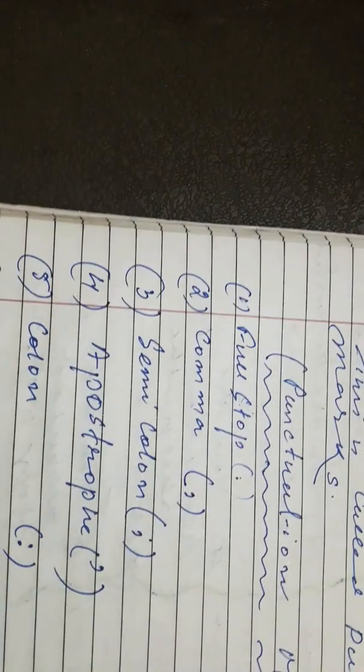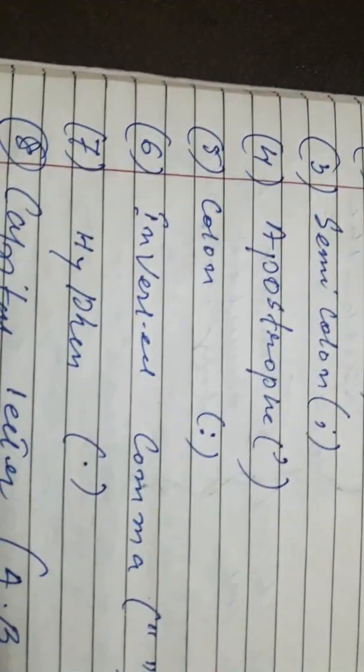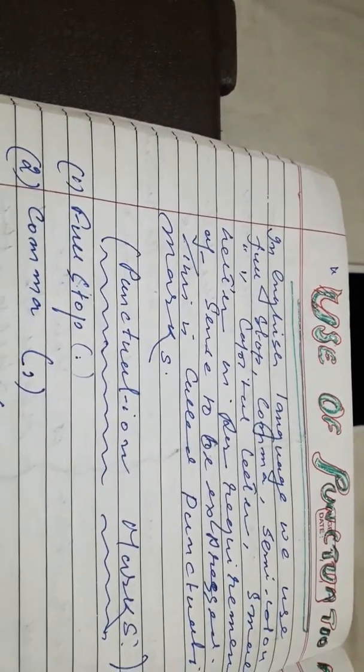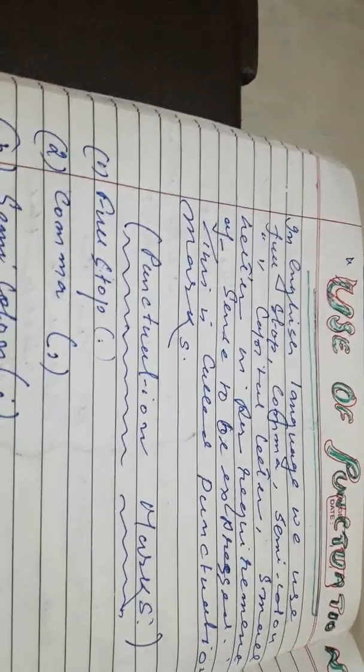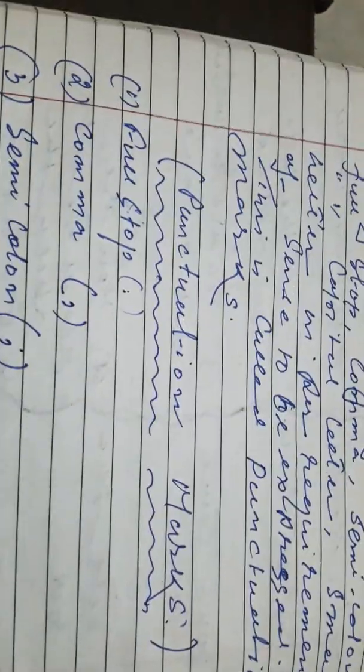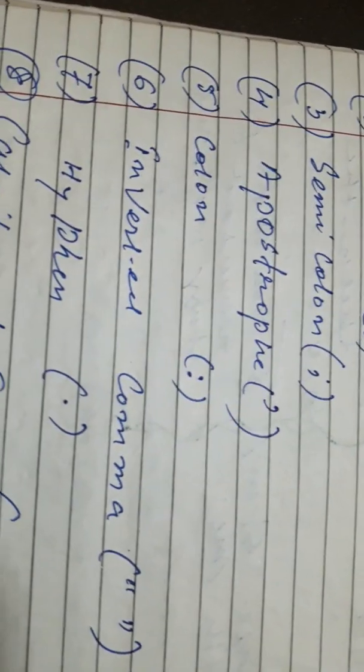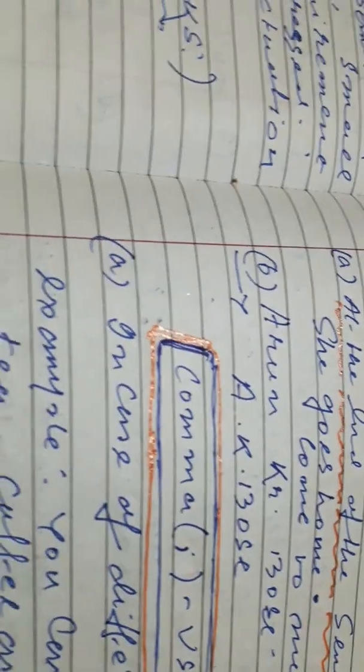Now, punctuation is an important matter in written expression. The punctuation marks include: full stop, comma, semicolon, apostrophe, colon, inverted comma, hyphen, and capital letter. In the English language, you use these marks — full stop, comma, semicolon, capital letter, small letter — as per the requirement of the sense to be expressed. This is called punctuation.